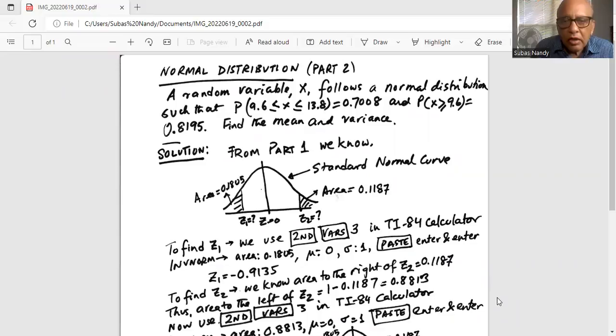Now from earlier we have done the work and we have found out that area to the left of unknown z1 standard normal variable is 0.1805, and area to the right of z2 on standard normal variable is 0.1187. Now z1 corresponds to the random variable 9.6 and z2 corresponds to the random variable 13.8. In order to find z1 we will use calculator TI-84.